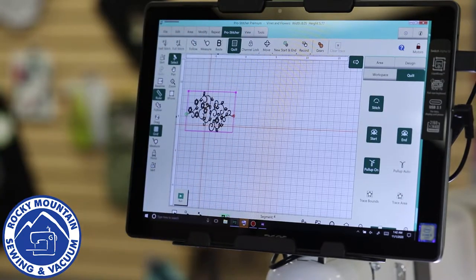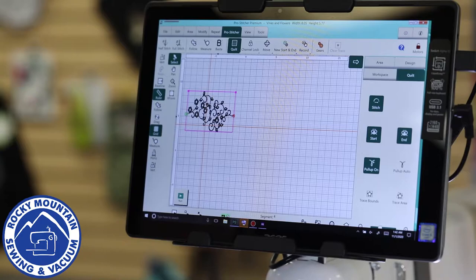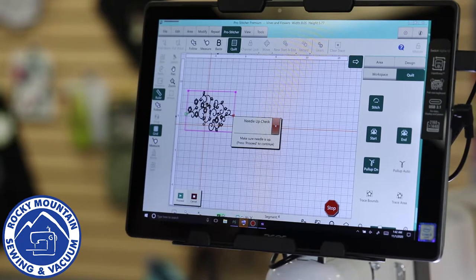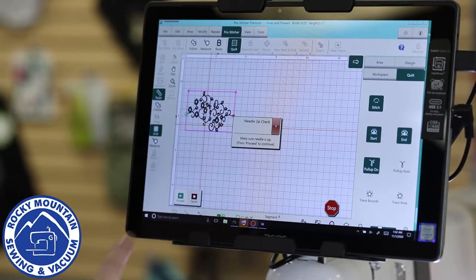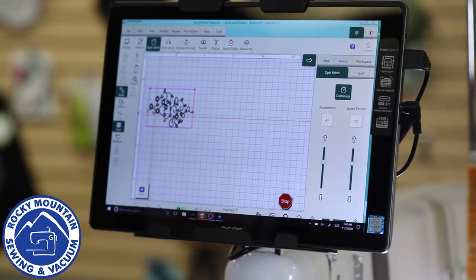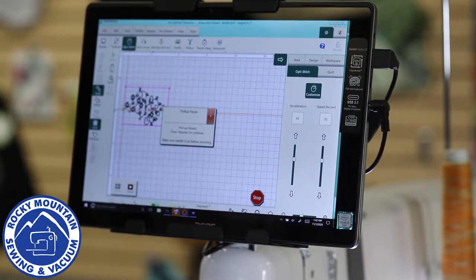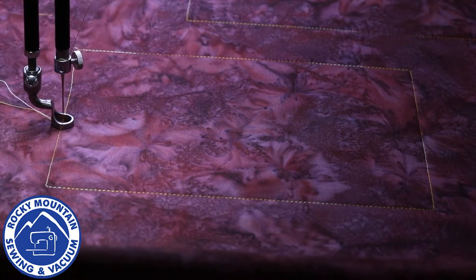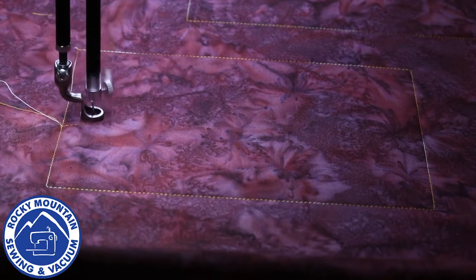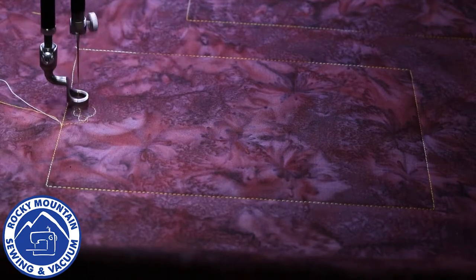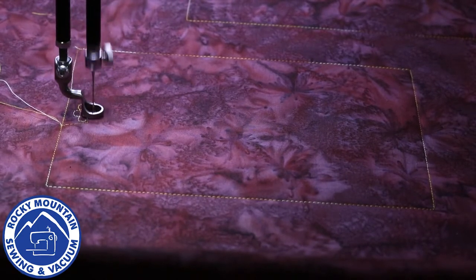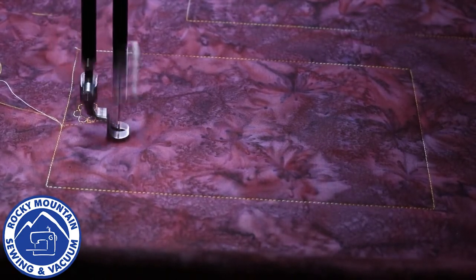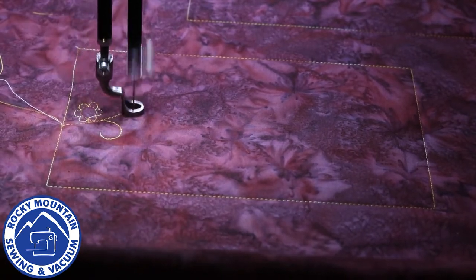So I'll go into ProStitcher and hit run and we'll get started. I'll hit run, make sure my needle is up, hit proceed, and then it'll let me pull up the thread. And here's the magic of ProStitcher where it actually just stitches by itself.